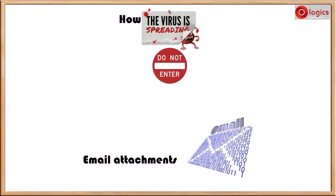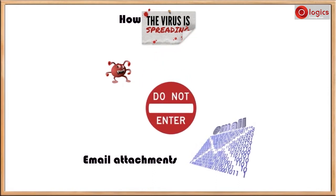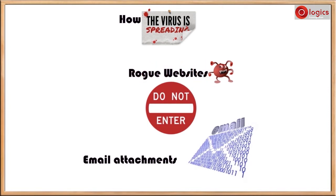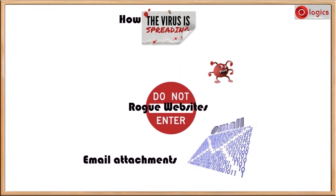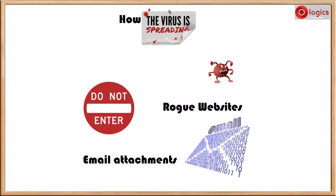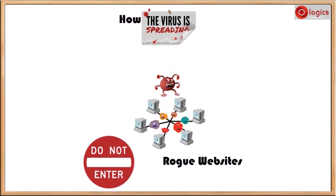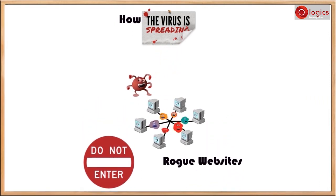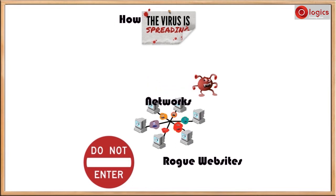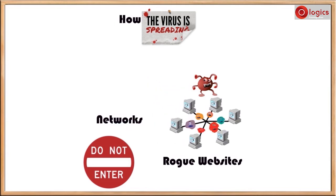There are many virus-spreading websites. Rogue websites are there on the internet, and those websites' main objective is spreading virus. Virus can also spread very easily in a computer network. Initially one computer may get affected in the network, and later the virus spreads through other computers of the network.